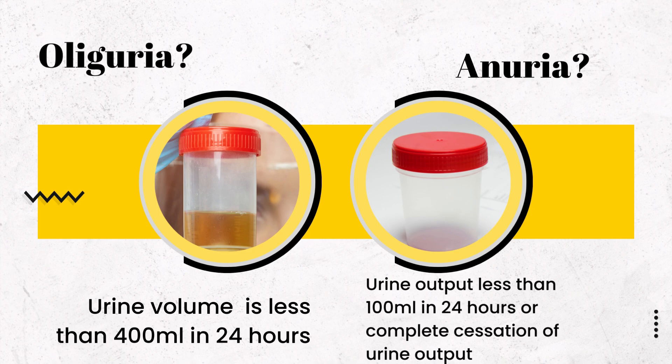Another condition is anuria. When the urine output of the previous 24 hours does not exceed 100 ml, or there is a complete cessation of urine output, then this condition is called anuria.